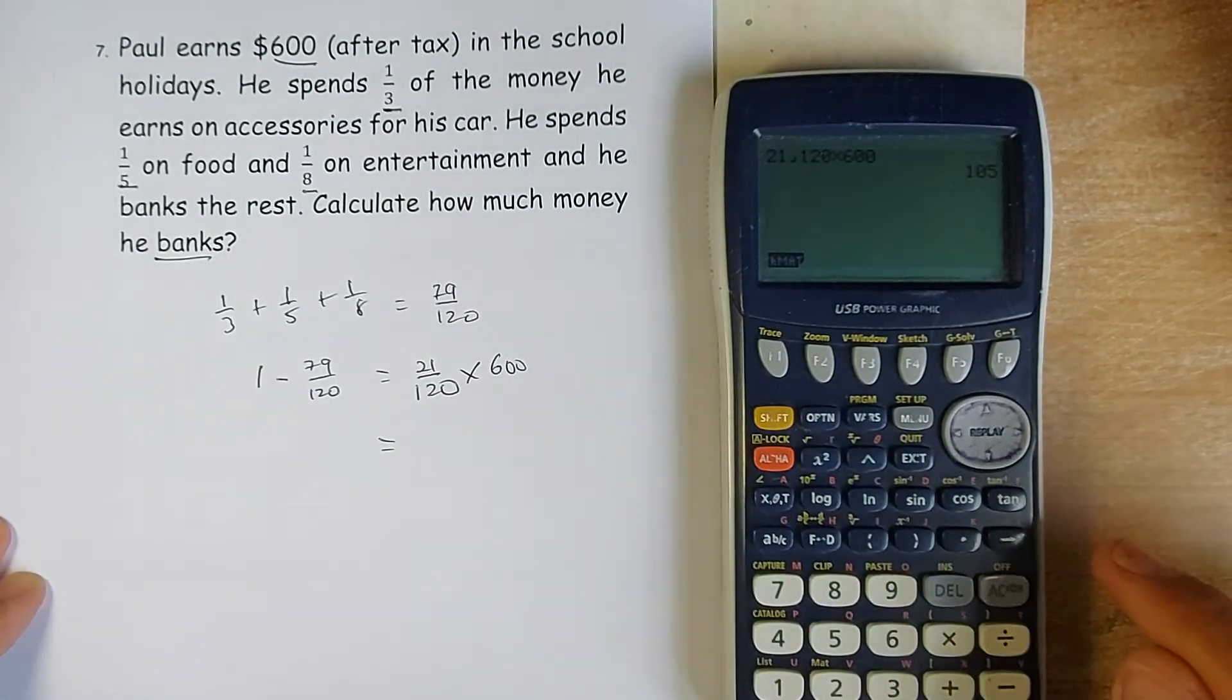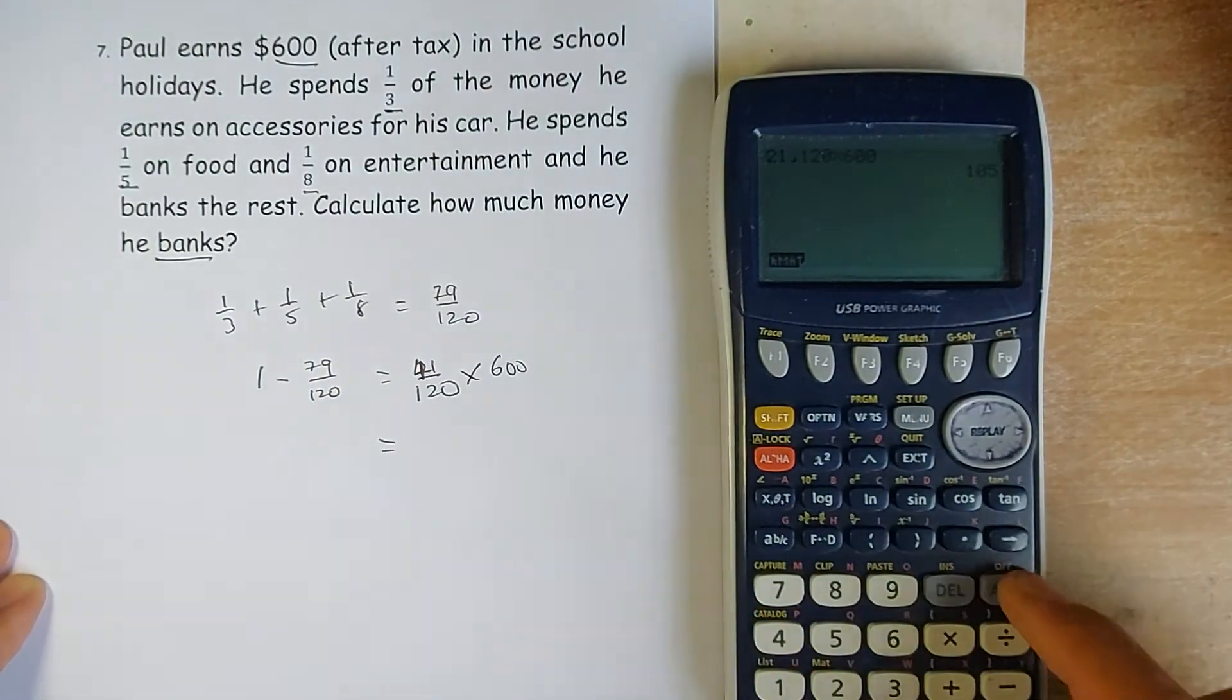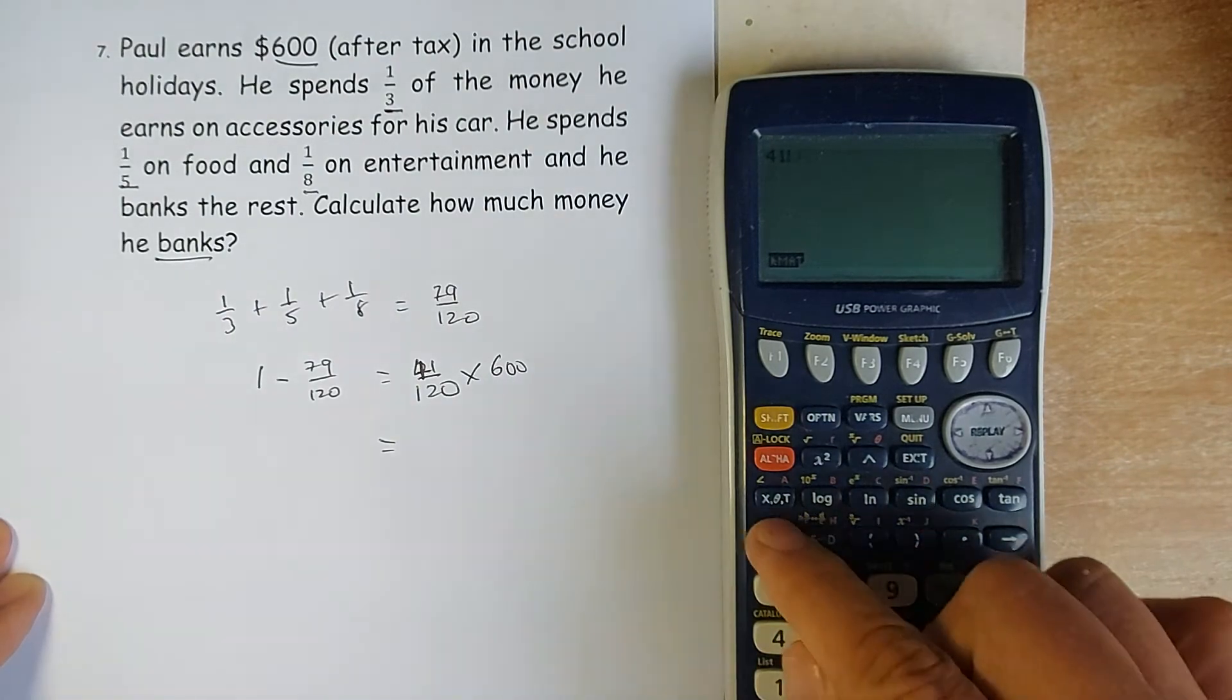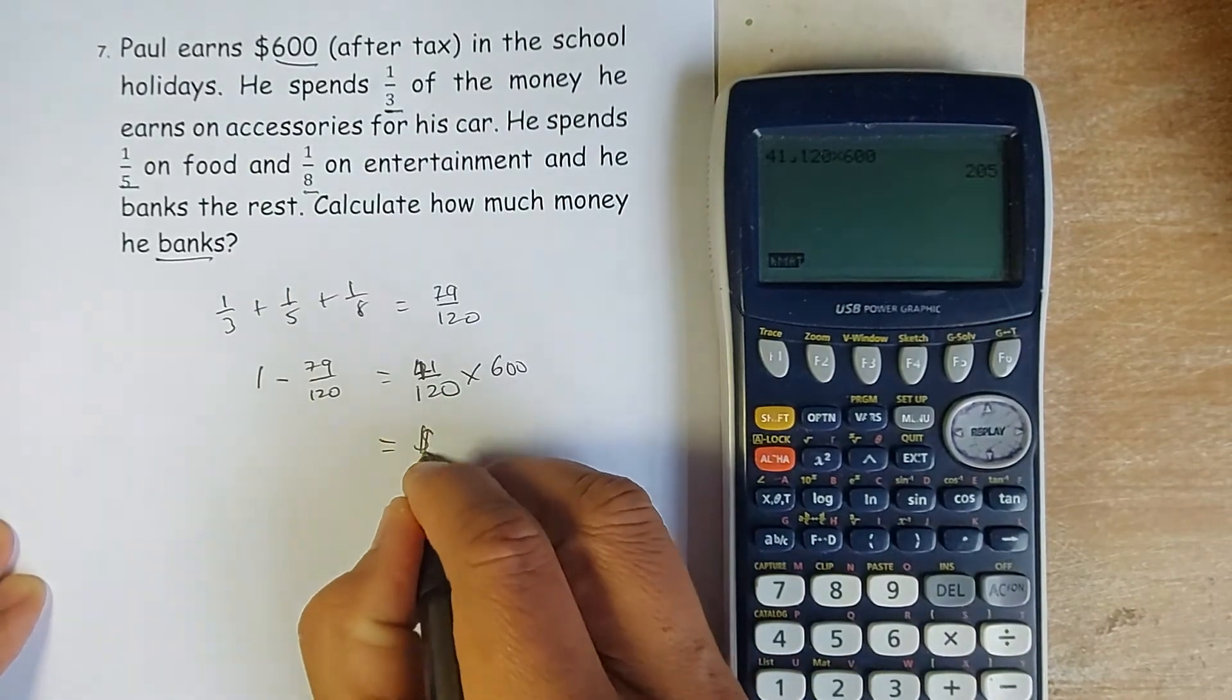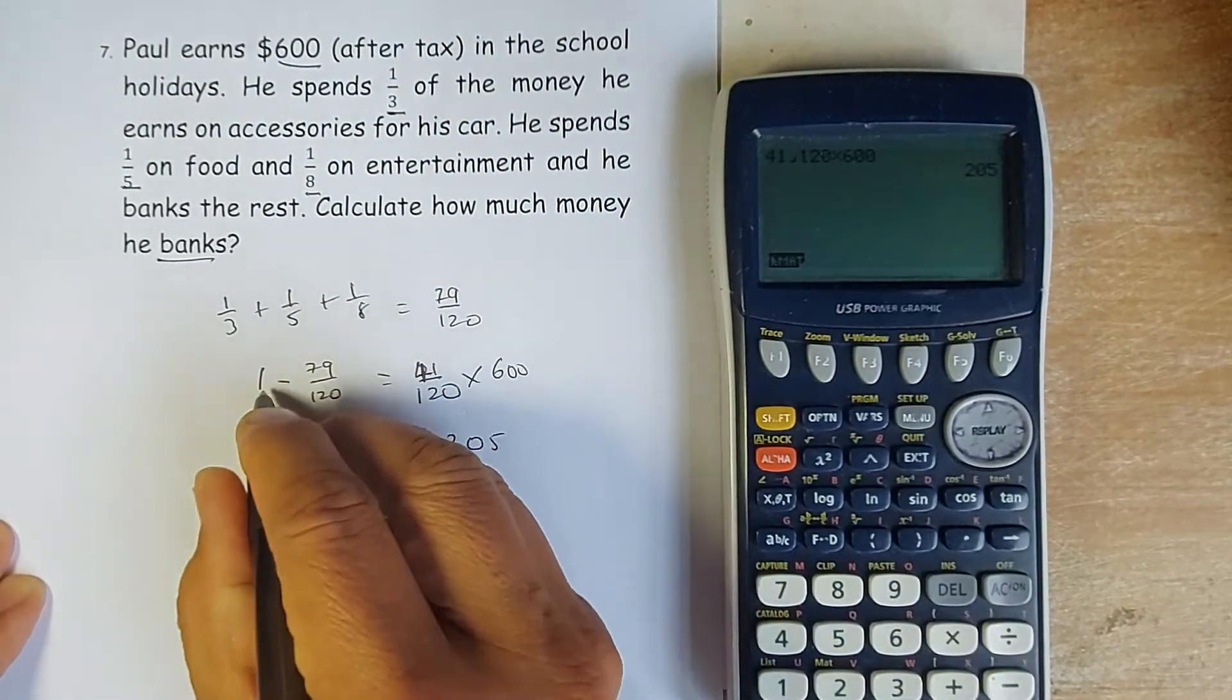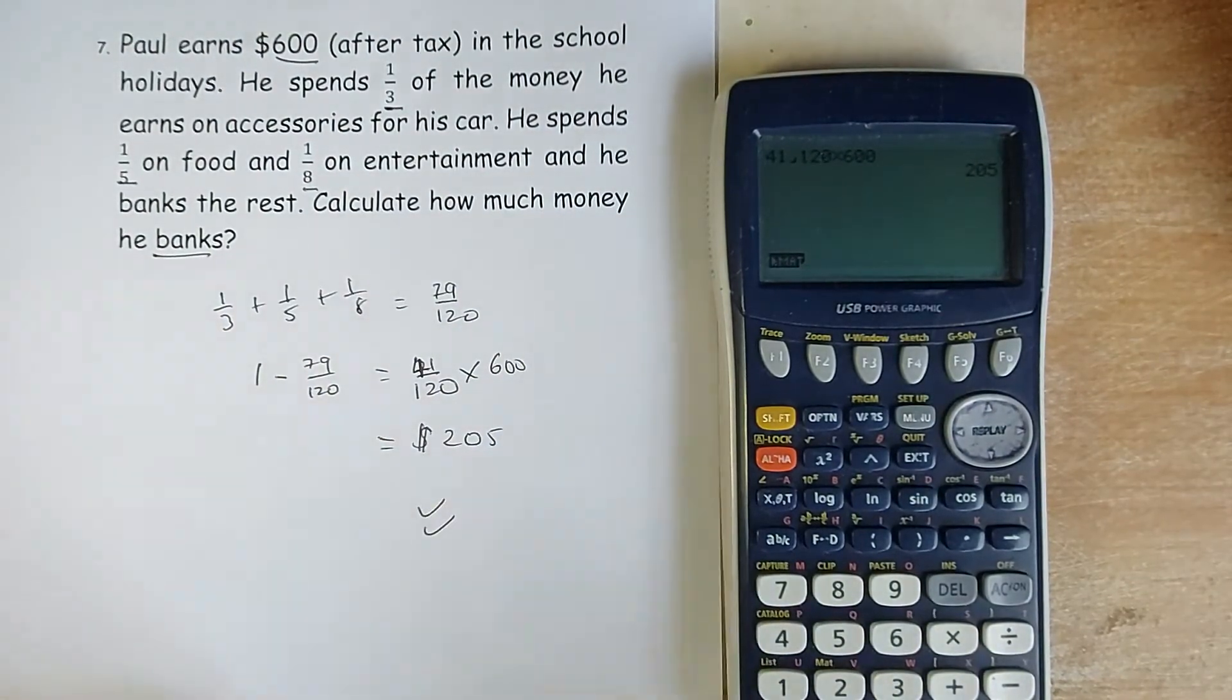And your answer is going to be $105. No, sorry again. So it's not 21 actually, it's 41. My mistake. 41 out of 120 times 600, and you're going to get $205. So 1 minus this will be 41, not 21, and that will give you 2 marks in the exam.